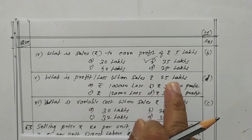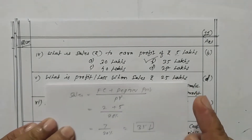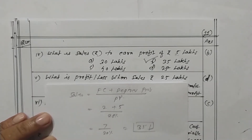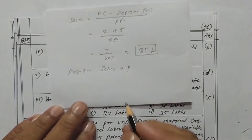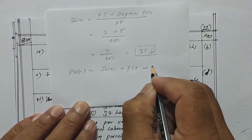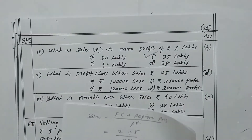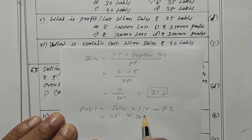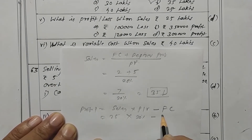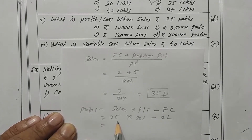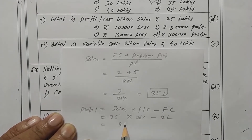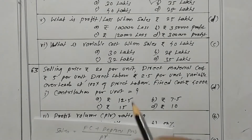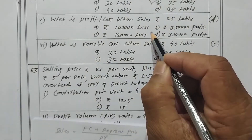Now what is the profit or loss when sales will be 25 lakhs? The formula is: profit equals sales into PV ratio minus fixed cost. Sales is rupees 25 lakhs, PV ratio is 20 percent, and fixed cost is rupees 2 lakhs. That gives 5 lakhs minus 2 lakhs, so the answer is 3 lakhs profit. Option D is the correct one.